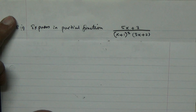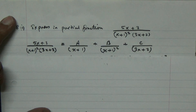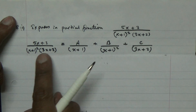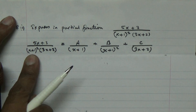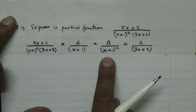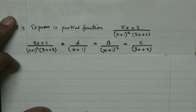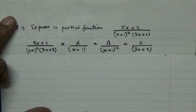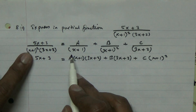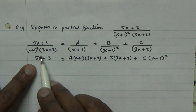To express this expression in partial fractions, you can see that this is equal to — we have a repeated linear factor here, (x+1) squared — so A over (x plus 1), B over (x plus 1) squared, plus C over (3x plus 2). To solve this, you multiply through: (x plus 1)(3x plus 2).